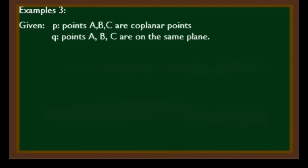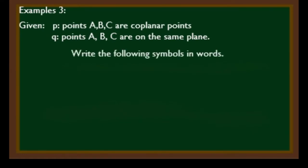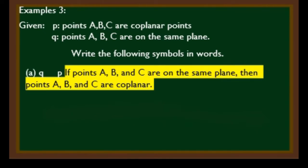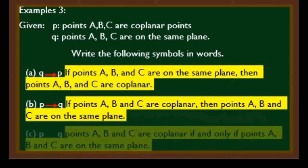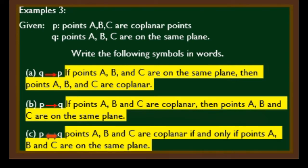Example 3: Given P — points A, B, C are coplanar points. Given Q — points A, B, and C are on the same plane. Write the following in words. A) Q implies P (converse): if points A, B, and C are on the same plane, then points A, B, and C are coplanar. B) P implies Q (conditional): if points A, B, and C are coplanar, then they are on the same plane. C) Biconditional: points A, B, and C are coplanar if and only if they are on the same plane. This is a valid statement based on the definition of coplanar points — points that lie in the same plane.